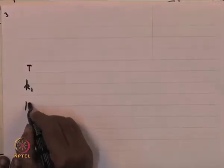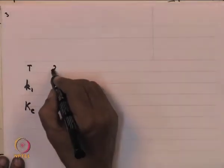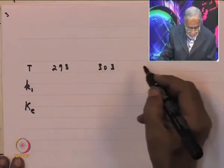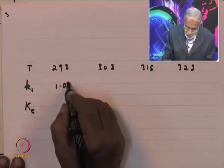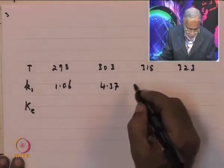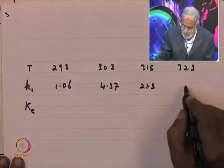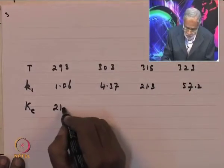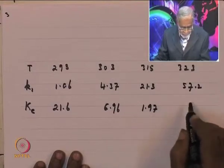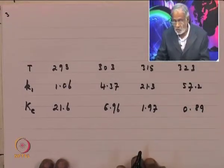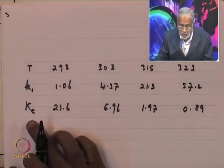Since the reaction is reversible, we need equilibrium data. The equilibrium constant K as a function of temperature T (in K) is tabulated. At 293 K, K = 0.293; at 303 K, K = 1.06; at 315 K, K = 4.37; at 323 K, K = 21.3; with additional values 57.2, 21.6, 6.96, 1.97, and 0.89 at higher temperatures. These reaction velocity and equilibrium constants are given.